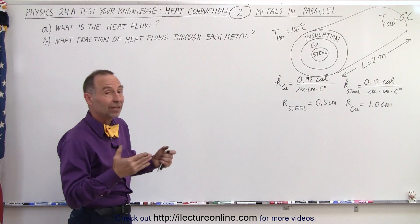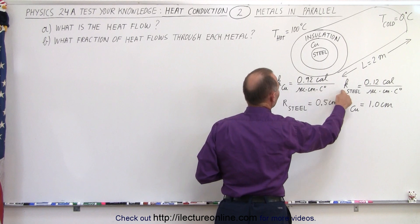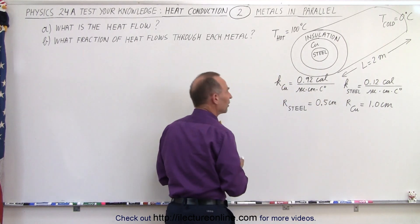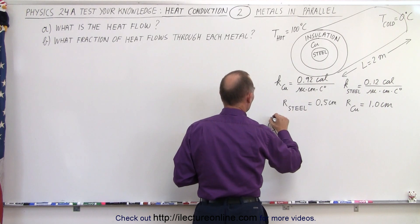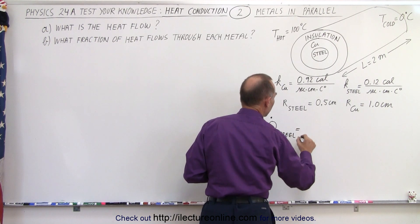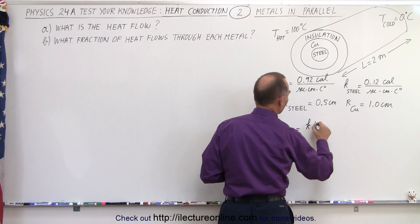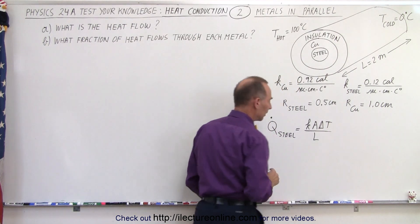Well, first of all, let's calculate the heat flow through each of the two sections starting with steel. Of course, here we have the coefficients of conductivity, and so we can say that the heat traveling through the steel section is going to be equal to K times the cross-sectional area times the delta, the difference in the temperature, divided by the length.